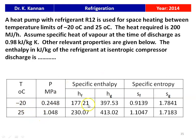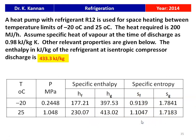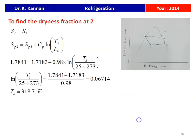The relevant properties are given in the table. At the evaporator temperature of minus 20 degree Celsius and the condenser temperature of 24 degree Celsius, the enthalpy, entropy, and specific entropy properties are given. The answer is 433.3 kilo joules per kilogram — that is the enthalpy at the outlet of the compressor.